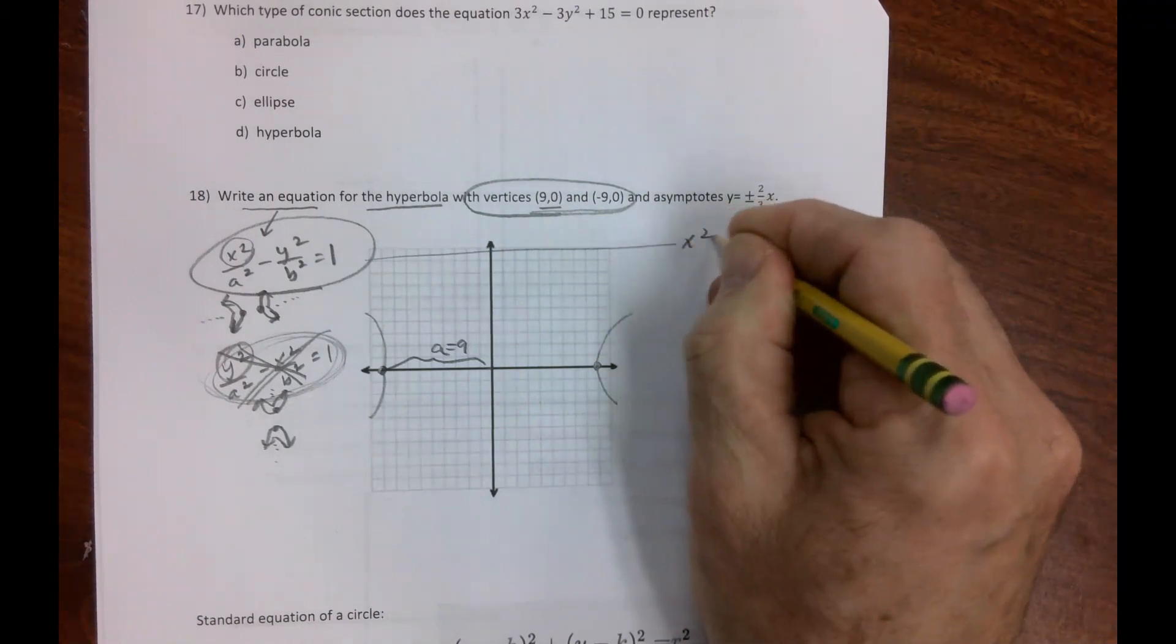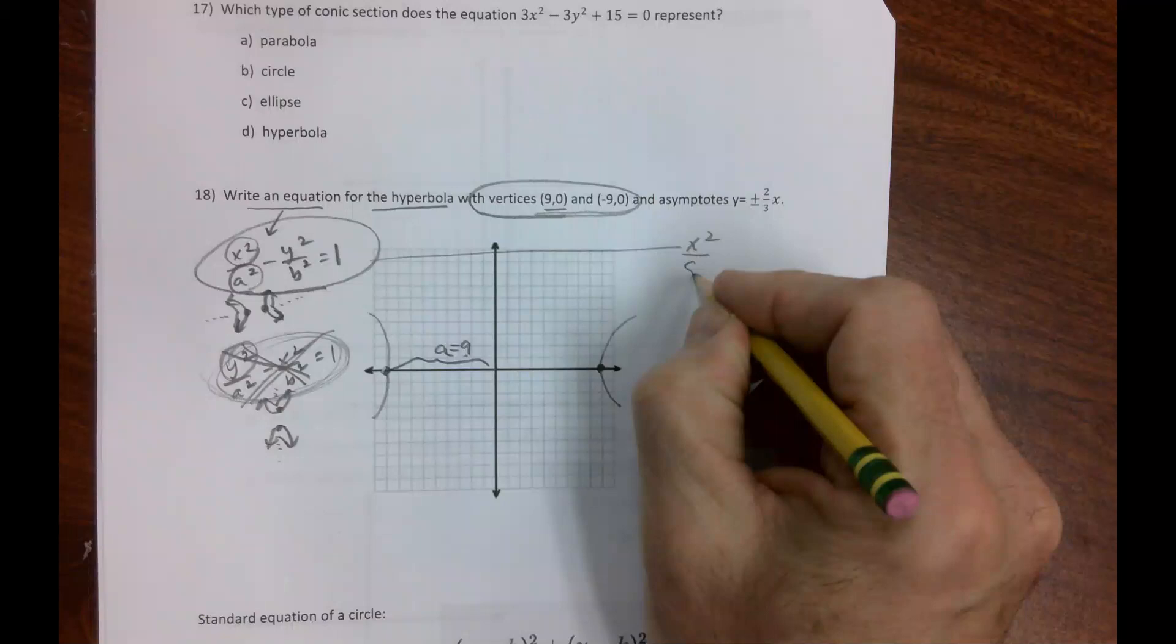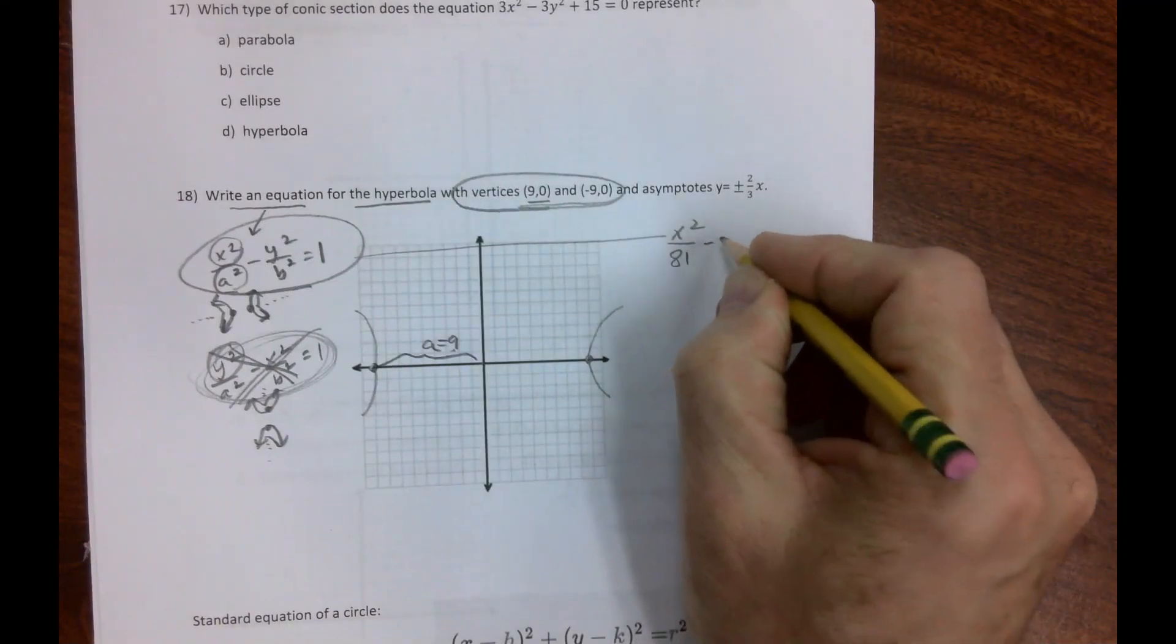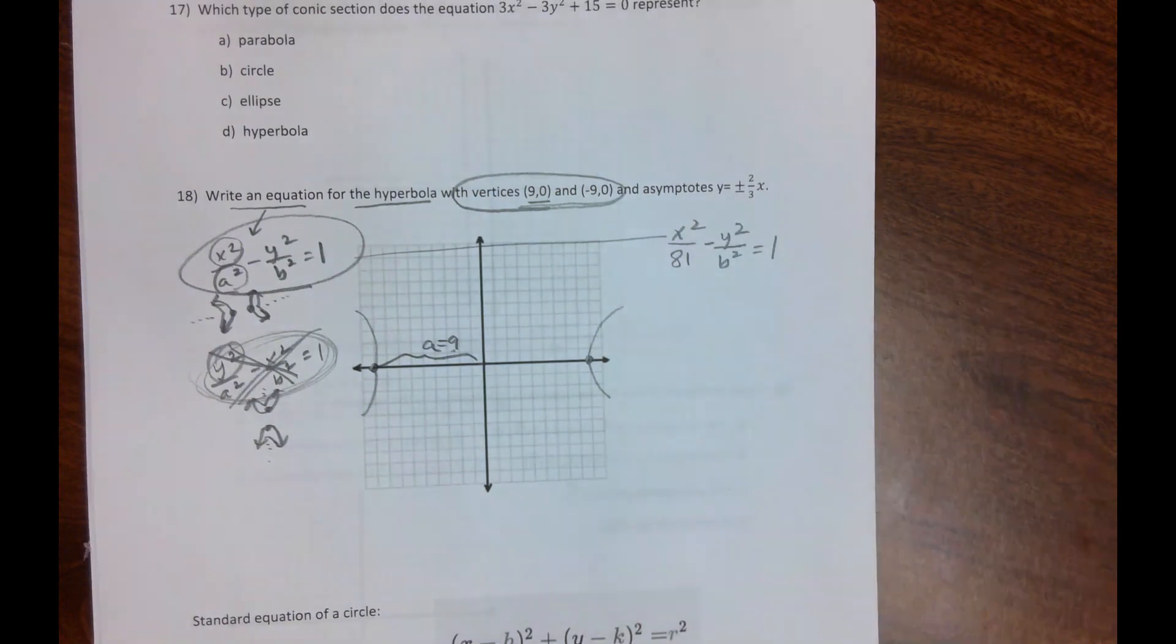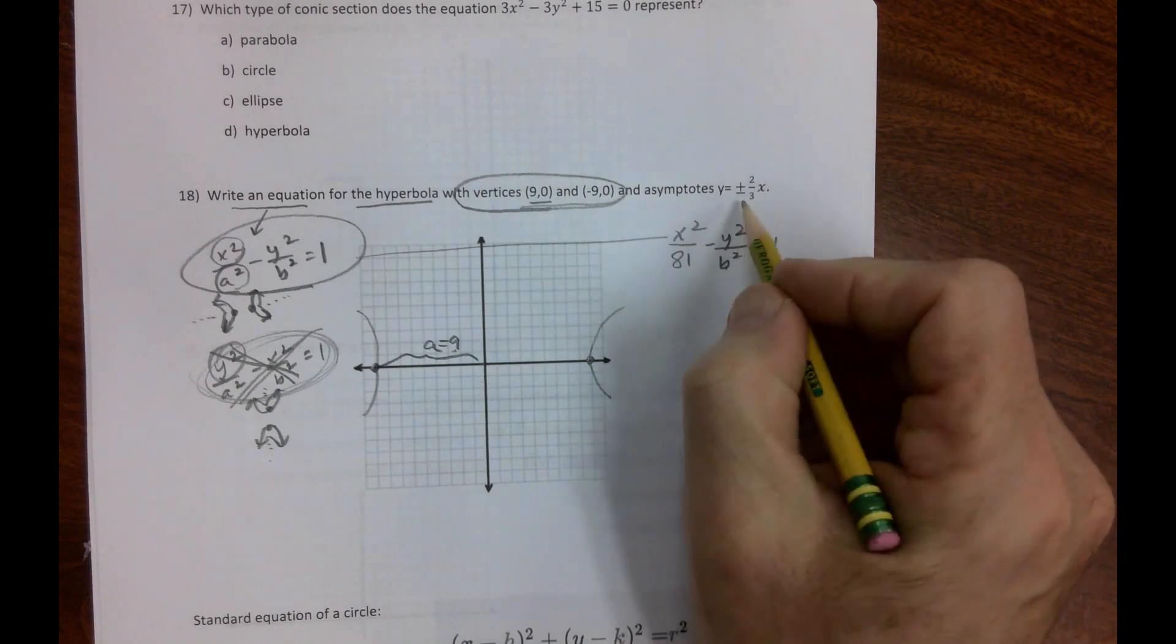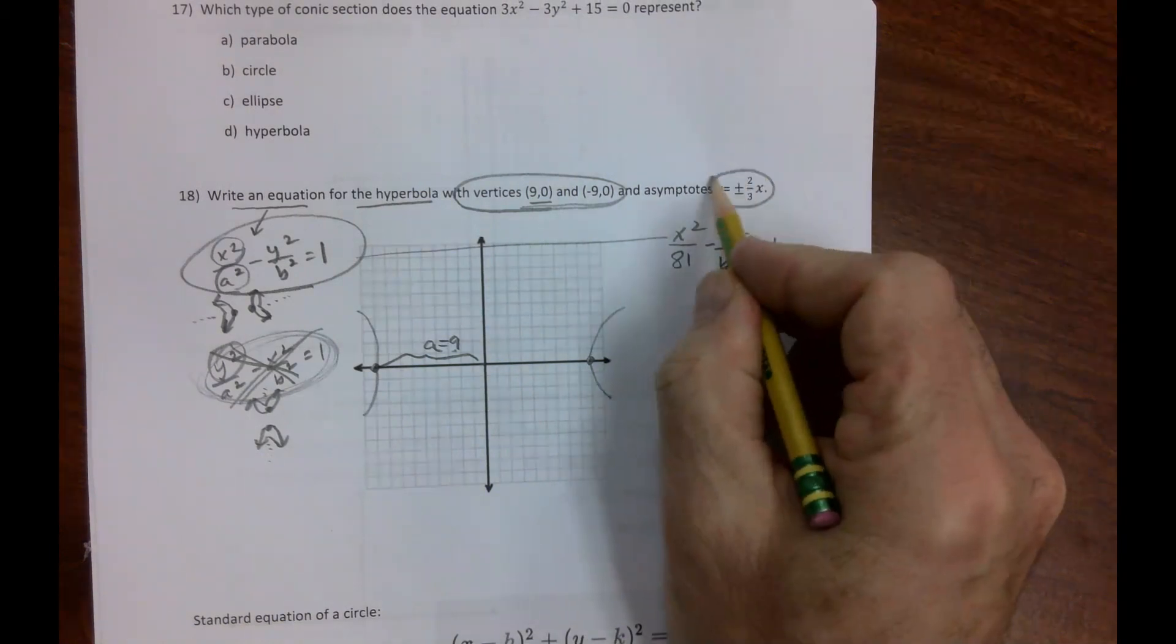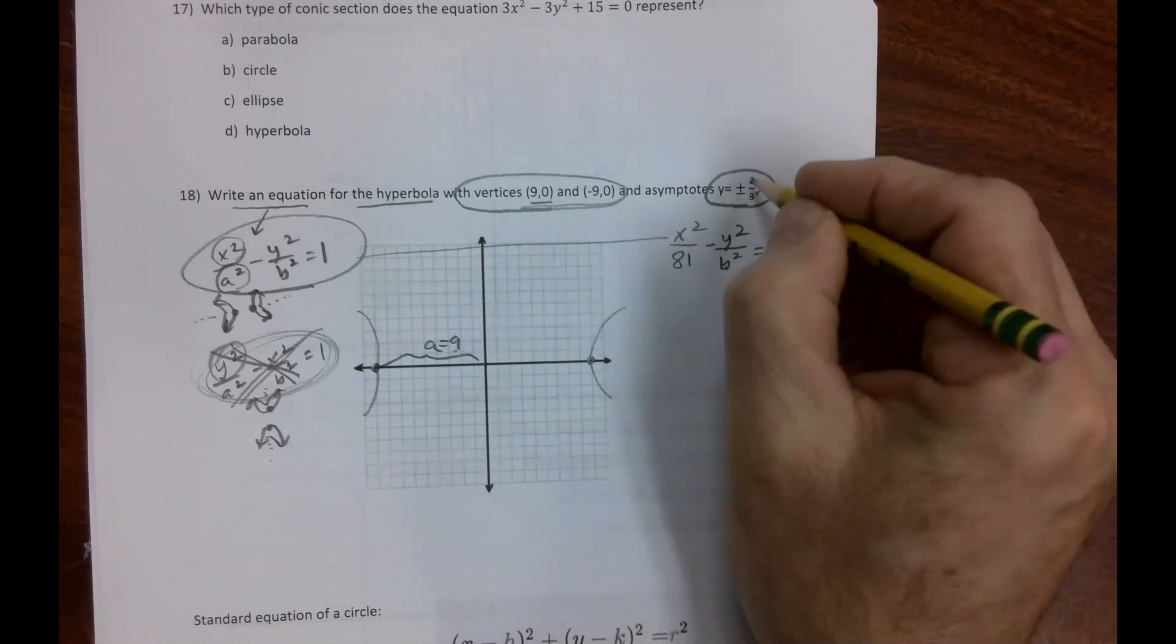We can start filling in some pieces. If a is 9, then a² must be 81. That was supposed to be the easy part, and that's the part I screwed up right away. Now the hard part: we have to find b. Notice they tell us the asymptote is ±2/3.